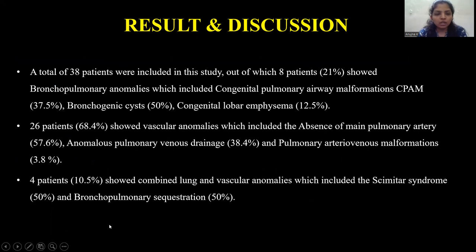Results and discussion: A total of 38 patients were included in this study. Eight patients showed pulmonary anomalies including congenital pulmonary airway malformation, bronchogenic cysts, and congenital lobar emphysema. Twenty-six patients showed vascular anomalies including absence of main pulmonary artery, anomalous pulmonary venous drainage, and pulmonary AV malformation. Four patients showed combined lung and vascular anomalies including Scimitar syndrome and bronchopulmonary sequestration.